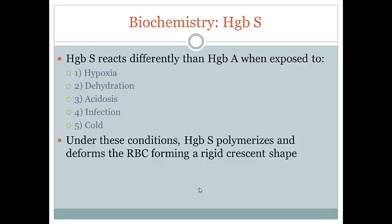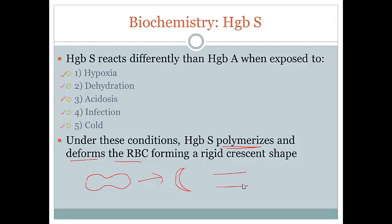Talking a little bit more about hemoglobin S — that one amino acid change completely changes how it reacts. Under certain situations such as hypoxia, dehydration, acidosis, infection, and cold, whereas hemoglobin A is largely unaffected by these things, hemoglobin S will form a rope-like fiber and align with other fibers, or polymerize. That's going to change the shape of the red blood cell from that nice, flexible biconcave disc shape into a rigid crescent shape. Because it's so rigid and fragile, it's going to get stuck — the cells will stick together in some of those smaller vessels and smaller capillary beds — and that's ultimately going to block blood flow. We'll see how that plays such an important role in the signs and symptoms a bit later.